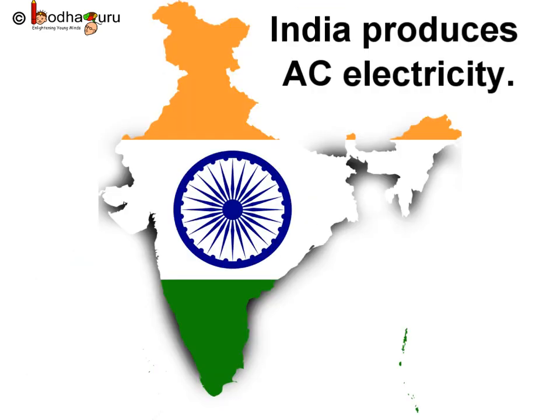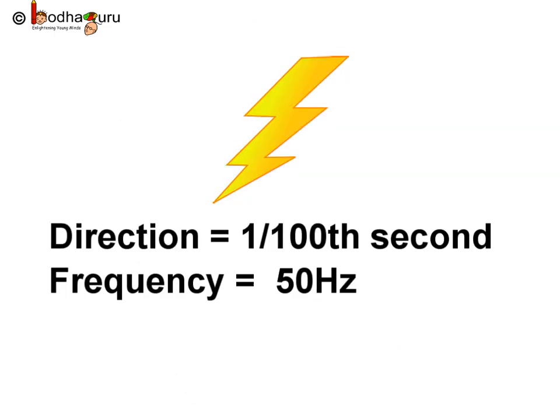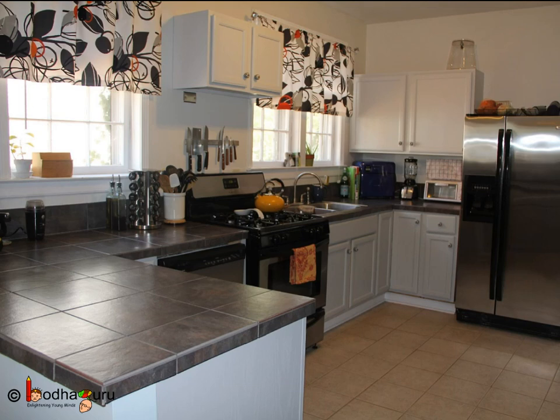In India we get electricity as alternating current, and the AC changes direction after every 1/100th of a second, and the frequency of AC is 50 Hz. You know most of the electronic appliances convert AC to DC before use.